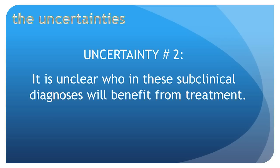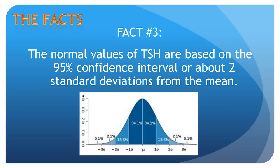But let's get back to the facts. Fact number three: the normal values of TSH are based on the 95th percentile confidence interval, or about two standard deviations from the mean. Simple concept — this is basic statistics. You take the population of normal euthyroid individuals, and the outlying 5% get defined as abnormal. If this is so easy, then why is obtaining a consensus about normal TSHs so difficult?